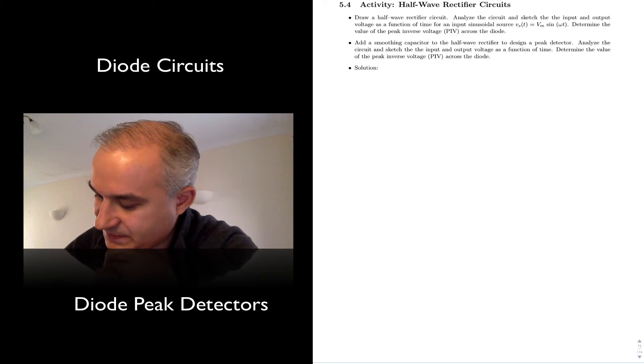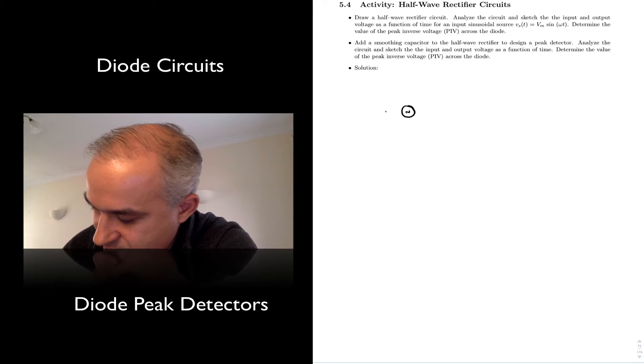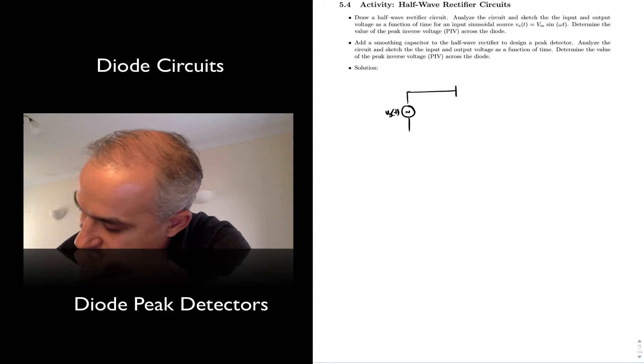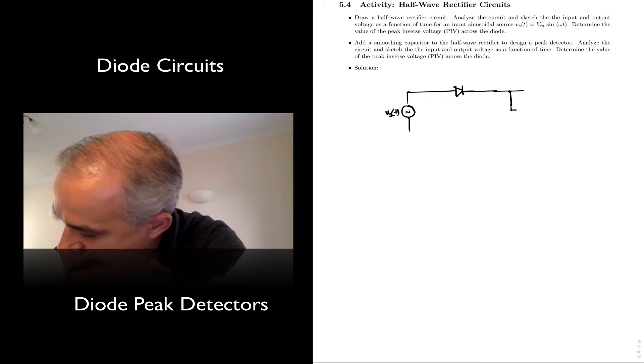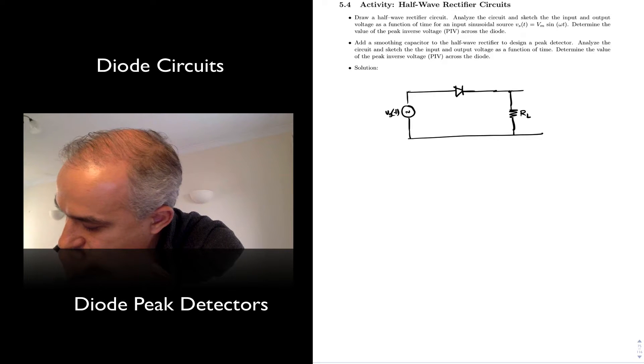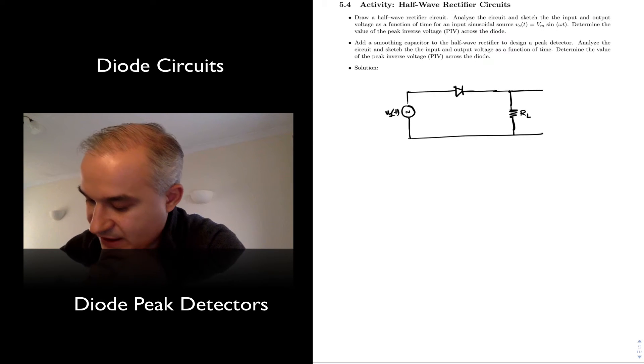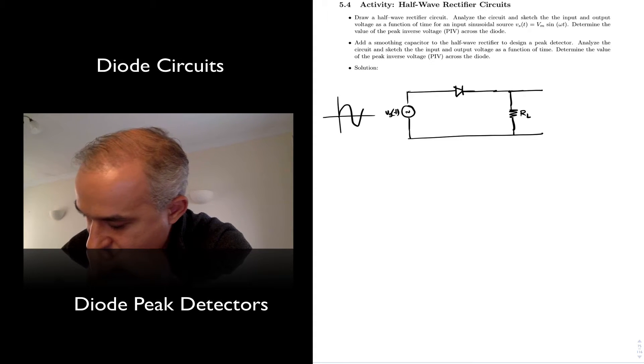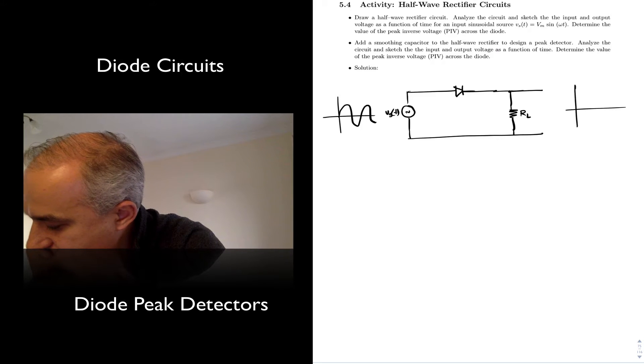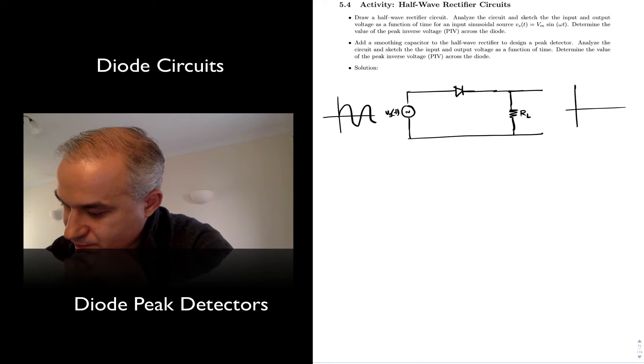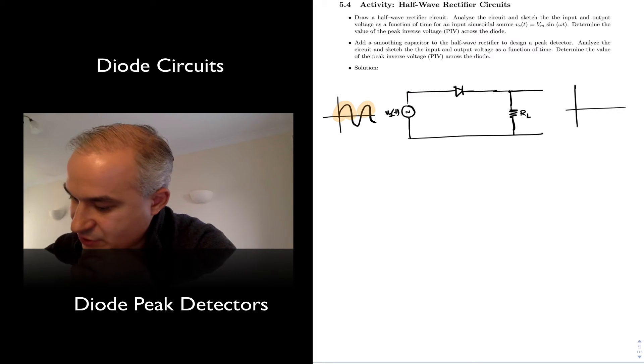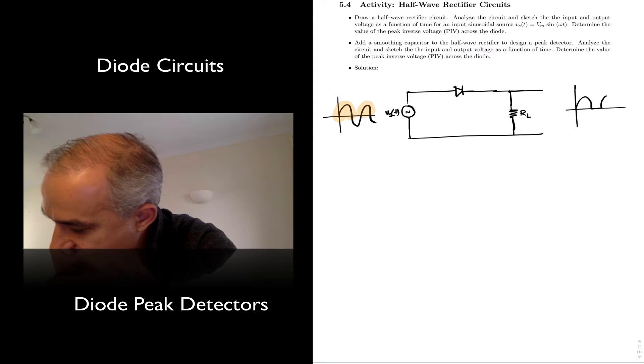So if you recall from the previous activity, if we have an AC signal and we put a diode in the path to a load, what we do is half-wave rectification, meaning if our input looks like this, our output, the diode only conducts during this region, and so we get a rectified waveform. It's our output voltage across the load.